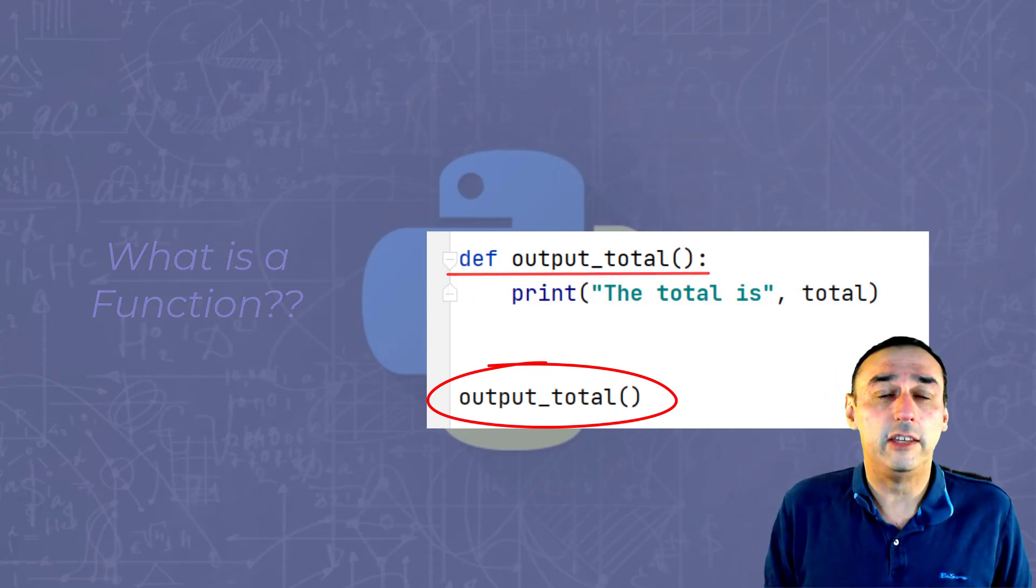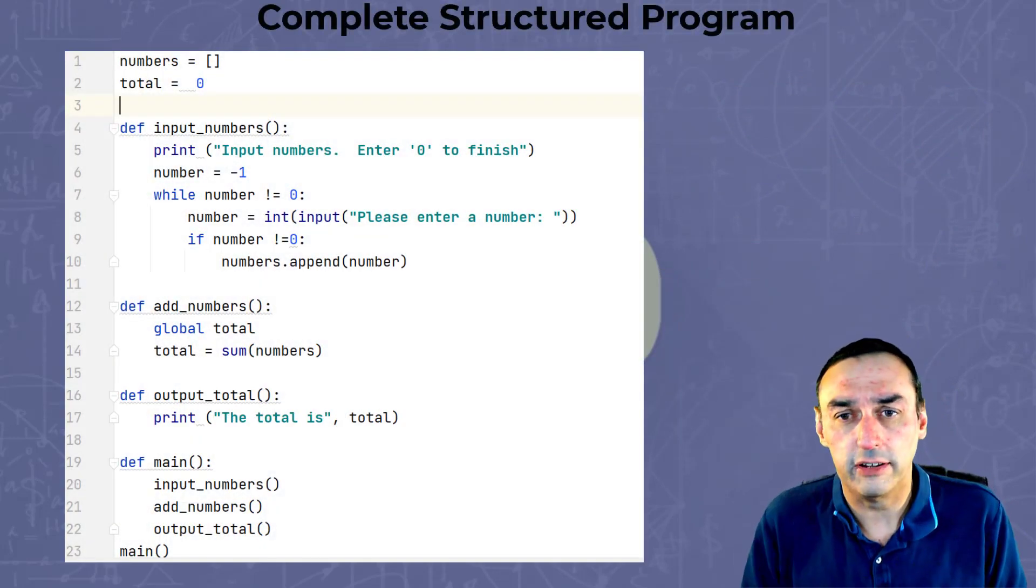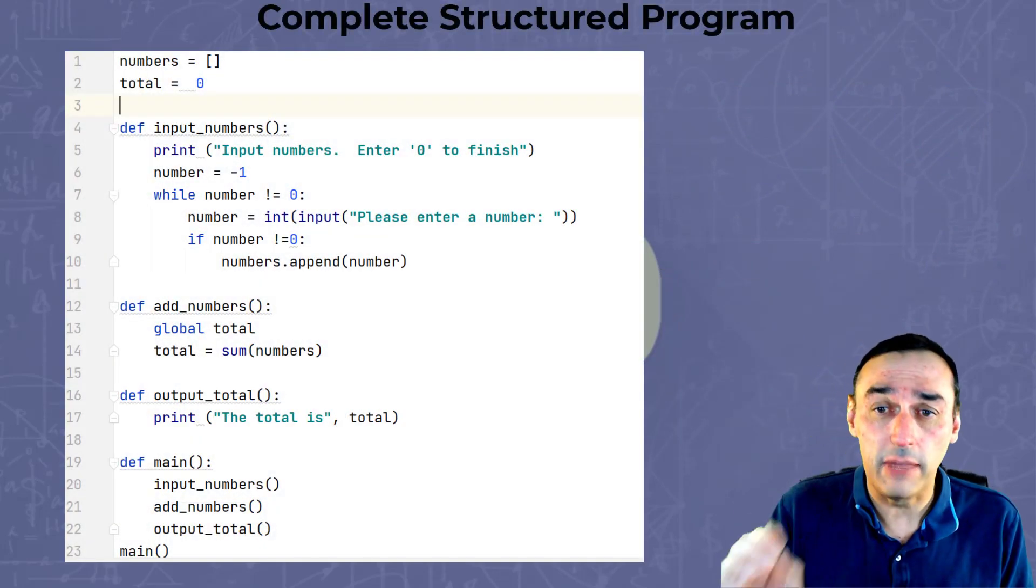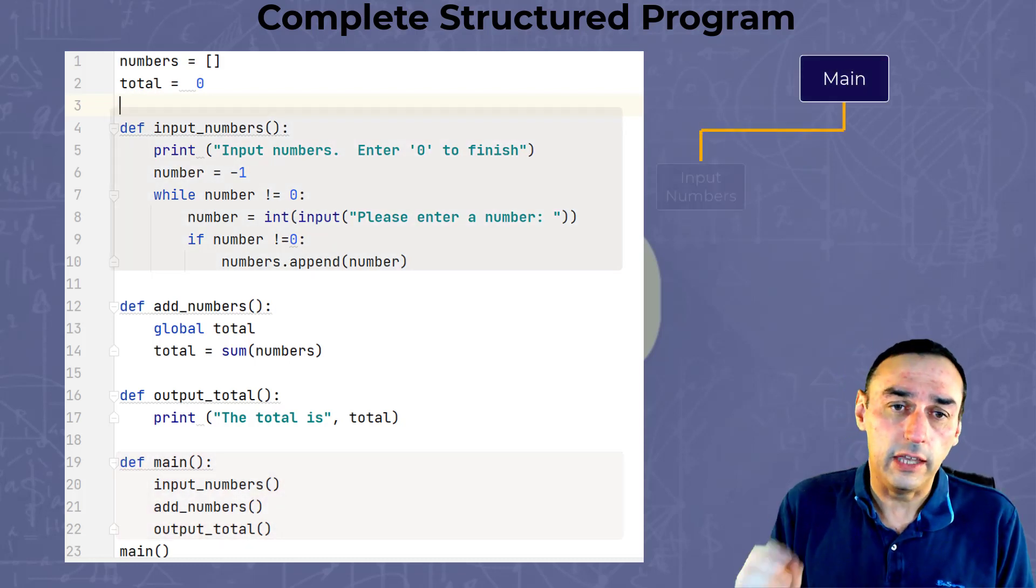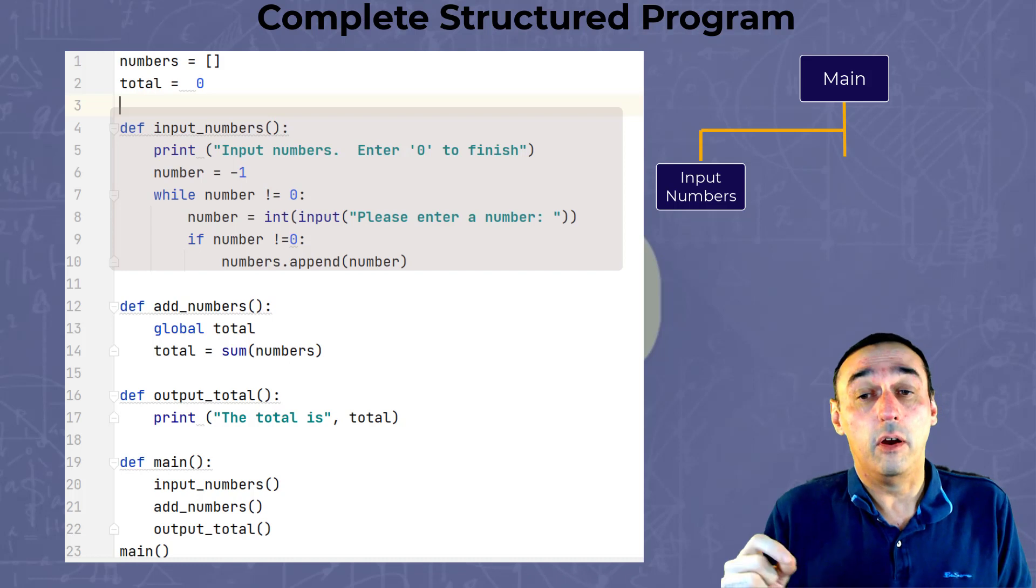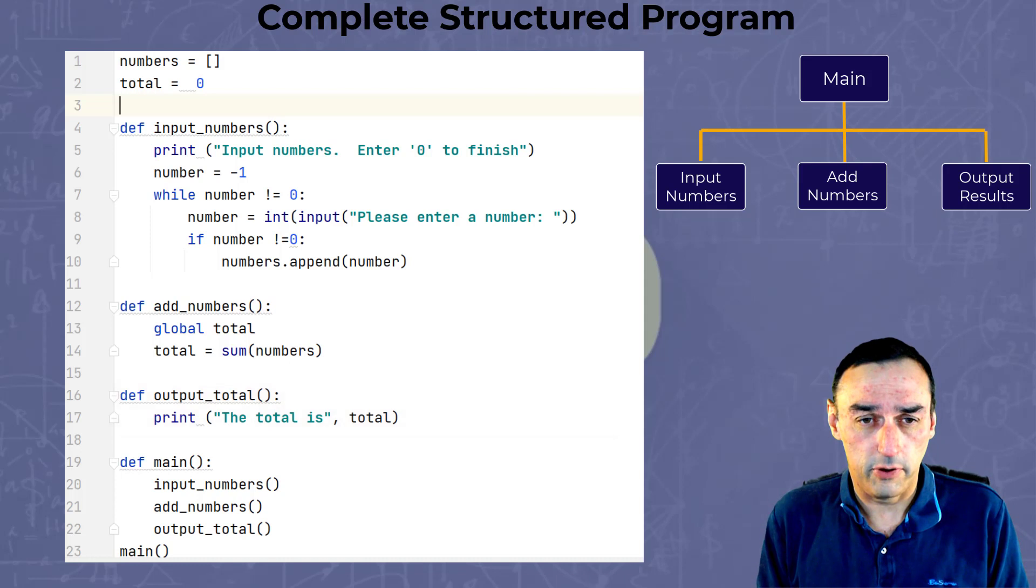So let's look at this in the context of the bigger program. If you go back to our diagram that we did earlier, we have the main function, which is at the bottom of the program there, followed by the input_numbers, followed by the add_numbers and followed by the output results parts of the program.